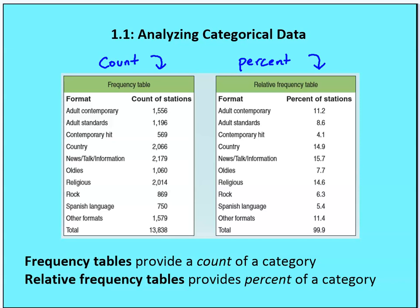We can create two different tables. A frequency table provides a count of the category — the number of stations that fall within it. A relative frequency table takes each category and compares them to each other as a percent of the total. For example, there are 1,556 adult contemporary stations, which represents 11.2% of the total. The right-hand side shows the relative importance of each radio station format as a percent or total count.